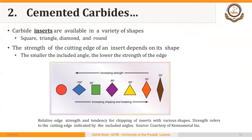Carbide inserts are available in a variety of shapes: square, triangular, diamond, and round. The strength of the cutting edge depends upon its shape — the smaller the included angle, the lower the strength. A round insert has the largest included angle (360°) and therefore the highest strength. Strength reduces for a 100° angle and further for 90°. The shape with the smallest included angle has the lowest strength, meaning the cutting tool will chip or break more easily. Depending on the application — roughing or finishing — and the workpiece material, you can choose among different shapes available.